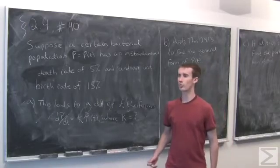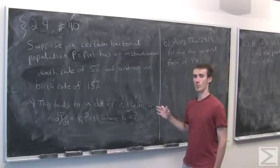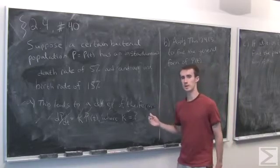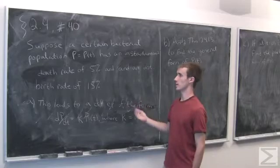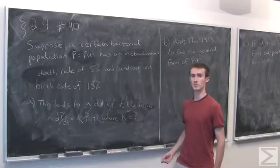Problem number 10 in section 2.4 is a population problem, where we're given that a certain population has an instantaneous death rate of 5% and an instantaneous birth rate of 15%.